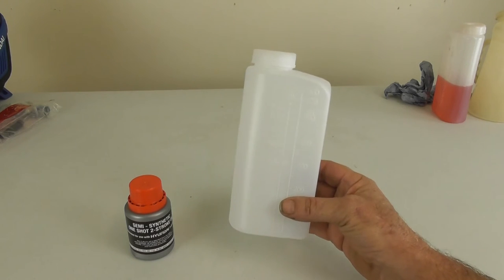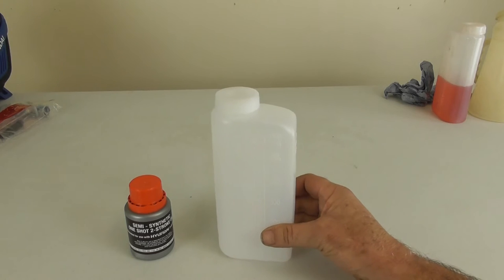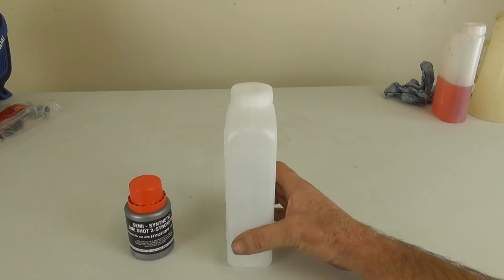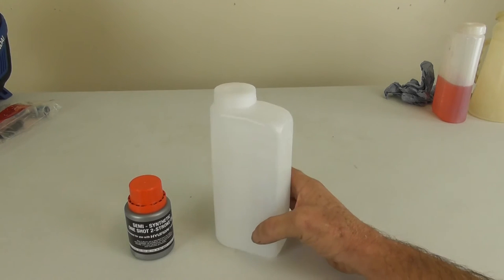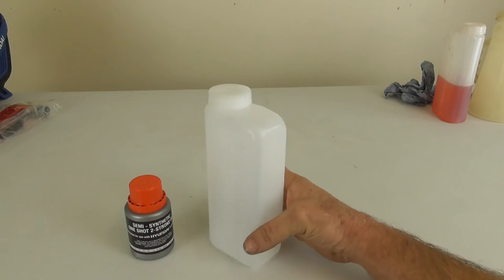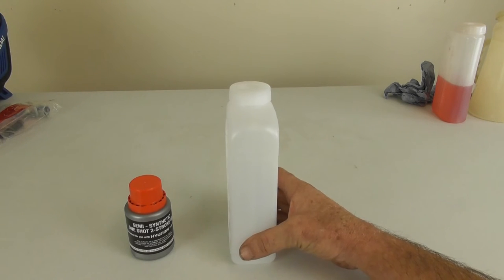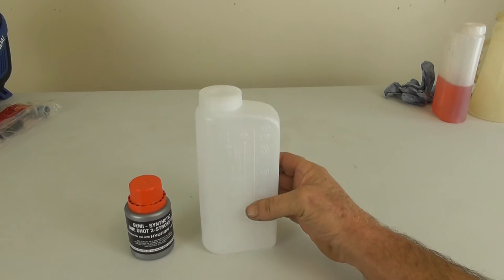We're going to move on to mixing the two-stroke oil with the petrol. We do supply this bottle with the unit and the mixture we're looking for is a 40 to 1 ratio. On the end of this bottle is a scale which shows 500 millilitres and then above it, a line which shows 40 to 1.